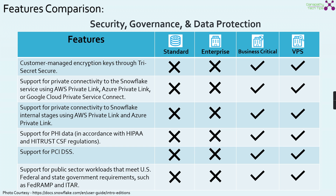Moving on, in the same category — customer-managed encryption key through Tri-Secret Secure is a Business Critical version feature. Support for private connectivity — Snowflake Private Link, AWS Private Link, Azure Private Link, GCP Private Link Service Connect — everything is available only on Business Critical version. Private link internal stages and Snowflake internal stages to Private Link are again Business Critical. Support for PHI data, HIPAA, and HITRUST compliance is only Business Critical. Support for PCI DSS is only Business Critical. Support for public sector workloads like US federal government, FedRAMP, and ITAR is again Business Critical. So more security is added in the layer of Business Critical.